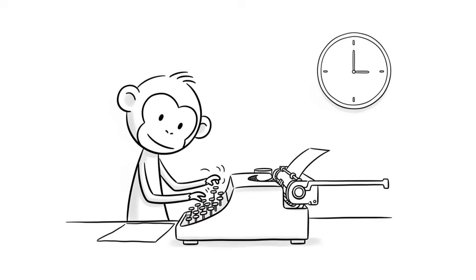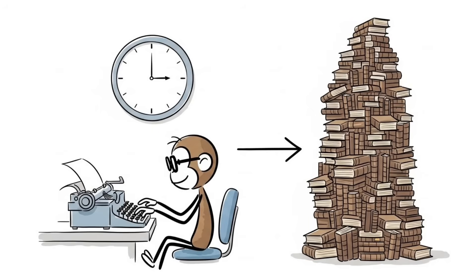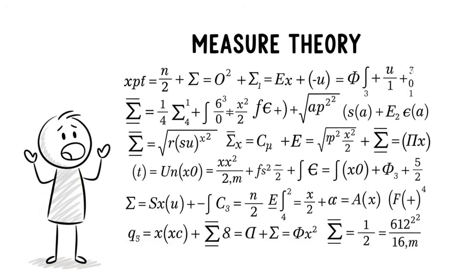Number five, order hidden inside randomness. Imagine a monkey sitting at a typewriter and indefinitely smashing keys completely at random. Given infinite time, that monkey will eventually type out the entire works of Shakespeare. This sounds absurd, but it's a mathematical certainty rooted in measure theory.